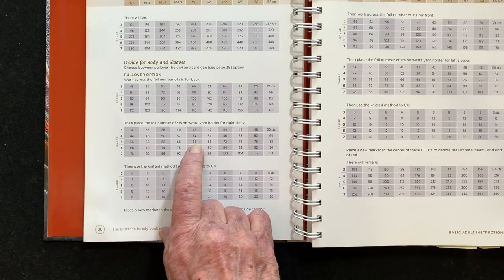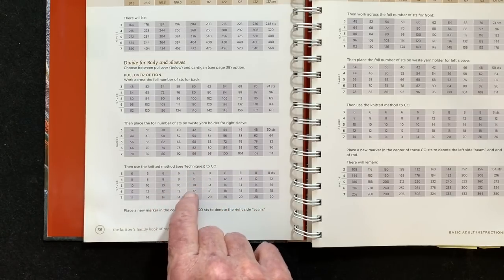On size 44 she has you put 68. That's a difference of six stitches. And then for both sizes you cast on 10 stitches under the arm.